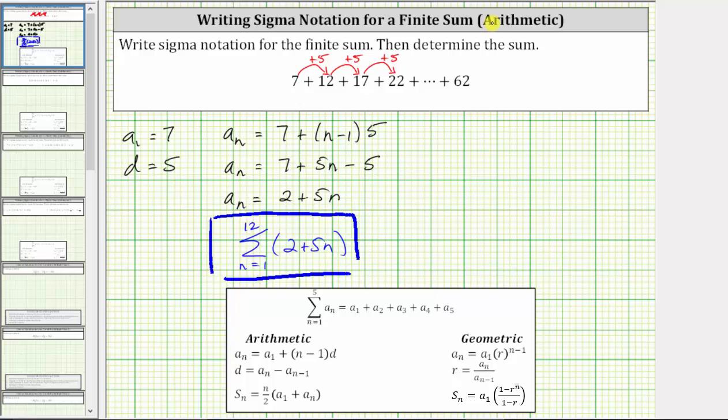And we can do this using the formula for S sub n, where n is the number of terms, and therefore this sum is going to be S sub 12.